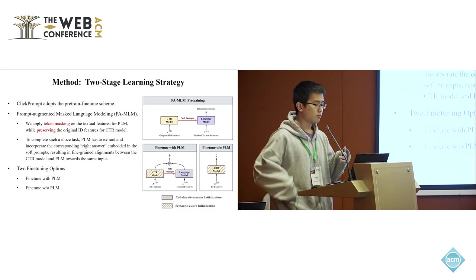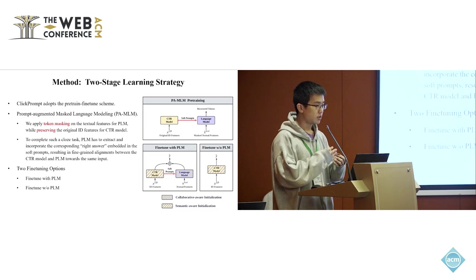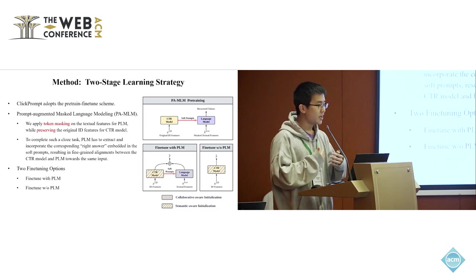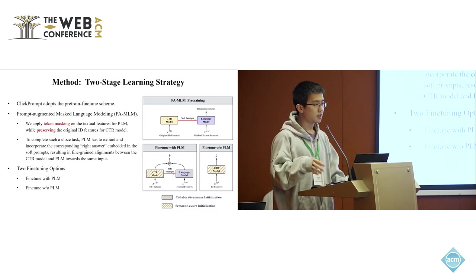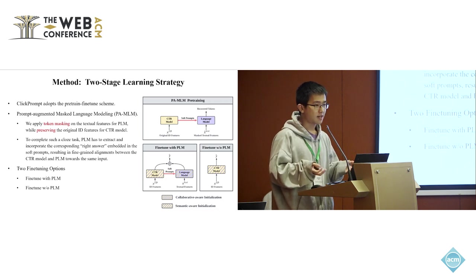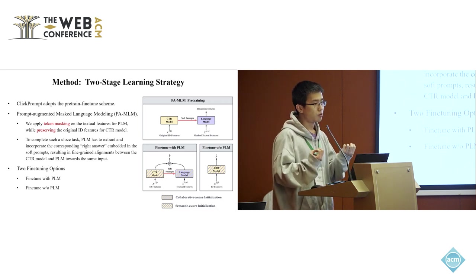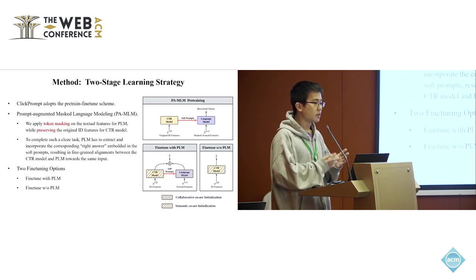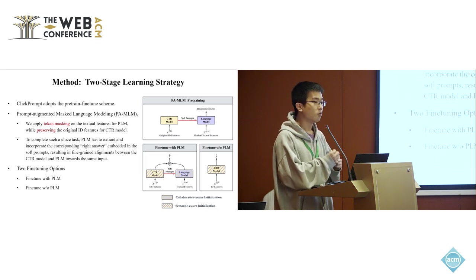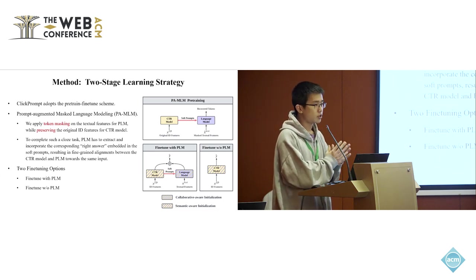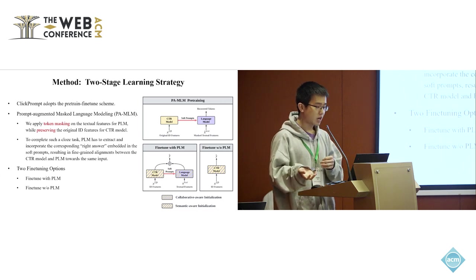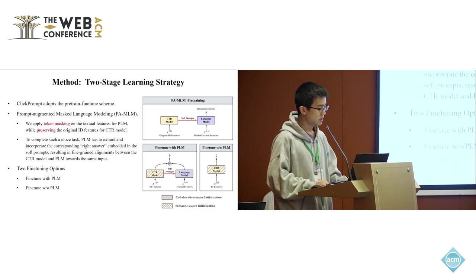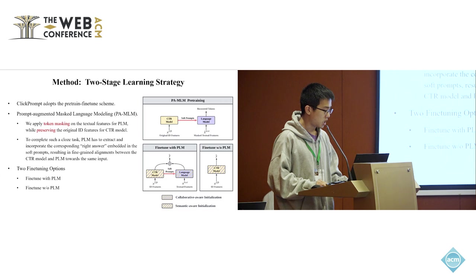For example, if we mask the feature gender female in the text features for the language model, if we want to recover the female feature value solely based on the text input only, it might be just a random guess since in the dataset, male and female, the proportion might just be half-half. But the original ID features are not corrupted, so the soft prompts can somehow contain the important information about the gender information. So to make a better token recovery, the language model has to look into the soft prompts and get the information out. And that is the core principle of our PAMLM.